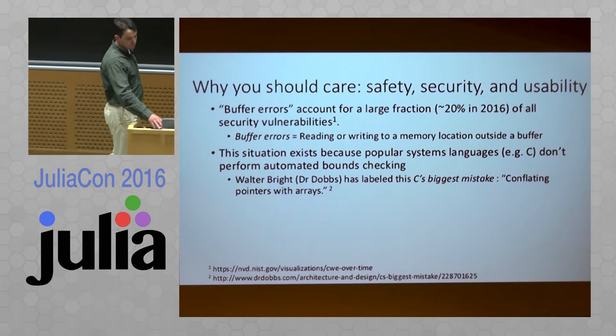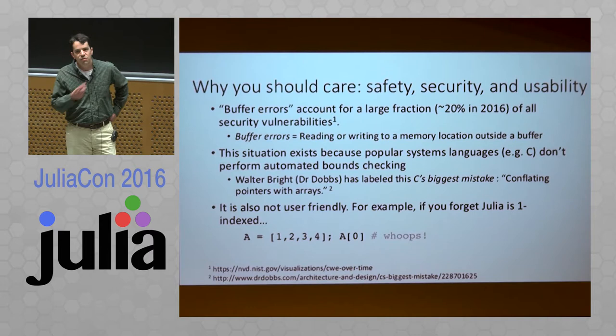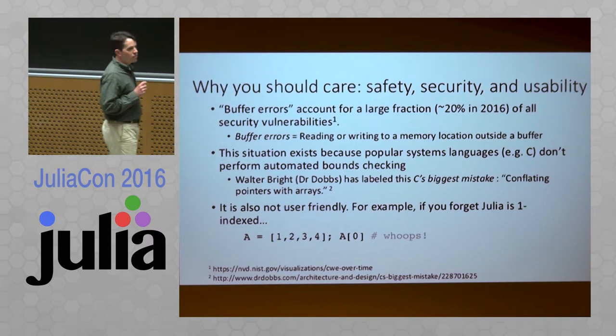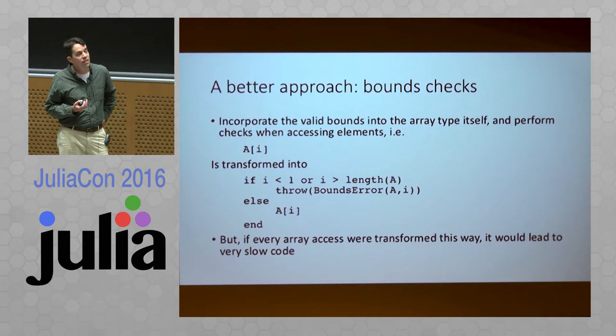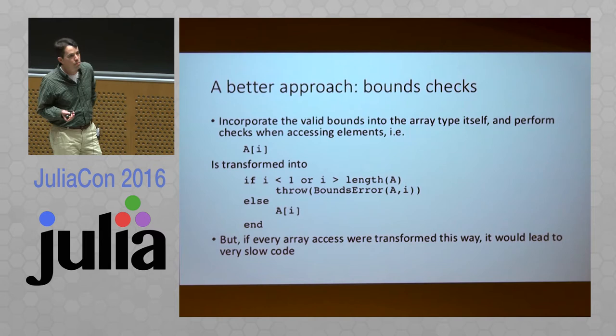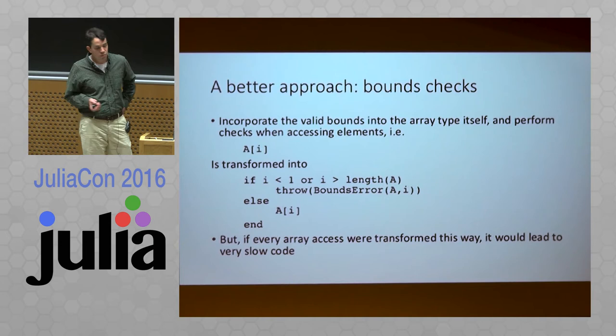It's not just a security problem, it's also a usability trap. Many people in this audience probably have to move between programming languages in their day-to-day experience. Some of you have forgotten that Julia has one-based indexing and written code that accesses index zero. Fortunately, Julia doesn't seg fault — it produces an error. Behind the scenes it's doing a transformation that verifies the index is valid before giving you a response. When you looked up the zeroth element of array A, you got a runtime error that helps you find your bug, rather than seg faulting.